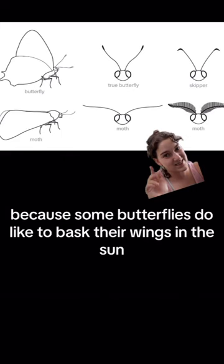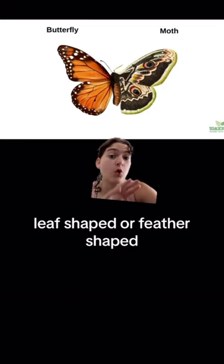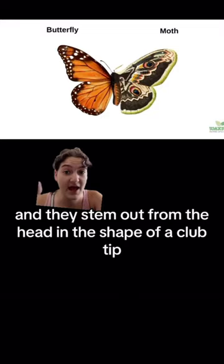So another way is through their antenna shapes. Moth antennae tend to be thick, leaf-shaped or feather-shaped. Butterfly antennae are thin, long, and straight, and they stem out from the head in the shape of a club tip.